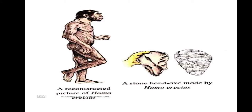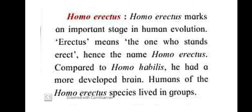You can see the picture over here. This is the picture of Homo erectus and the tools which were made from stone by Homo erectus. After looking at this picture, you will find that Homo habilis and Homo erectus were looking different from each other. So we will be discussing more about Homo erectus. Homo erectus marks an important stage in human evolution.